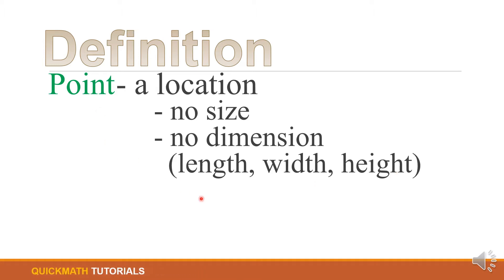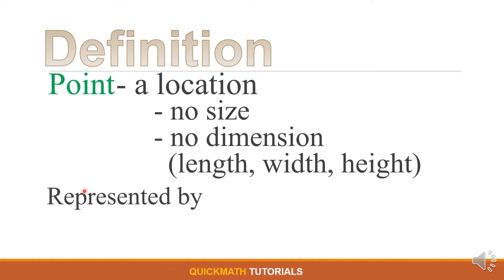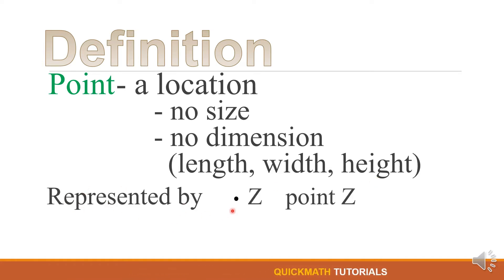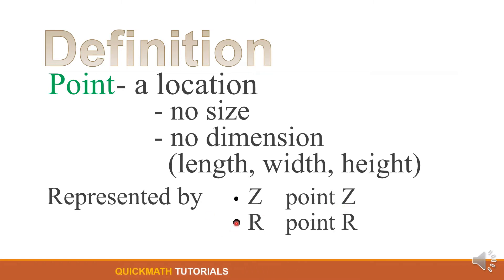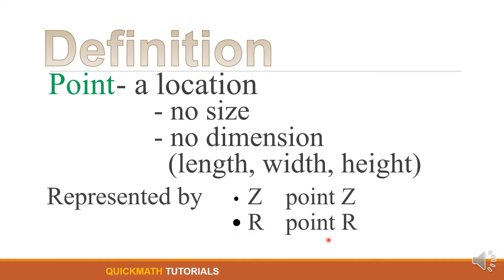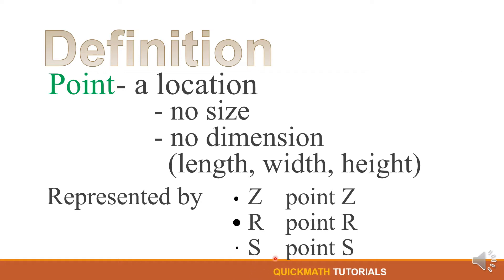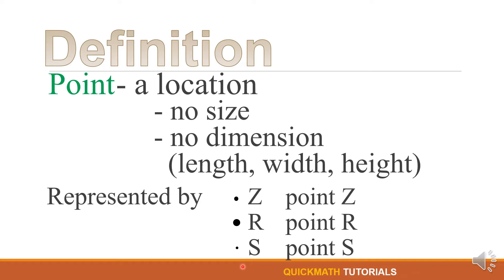So a point has no length, no width, and no height. It is represented by a small dot followed by a capital letter — for example, point Z or point R. We can also write a small dot followed by the capital letter S, which we read as point S.